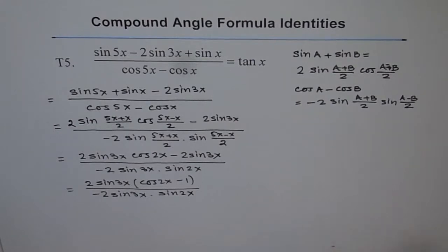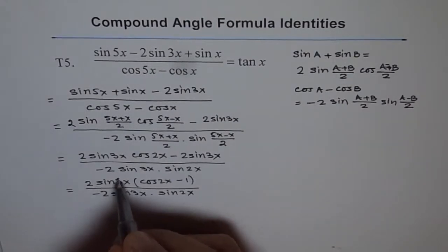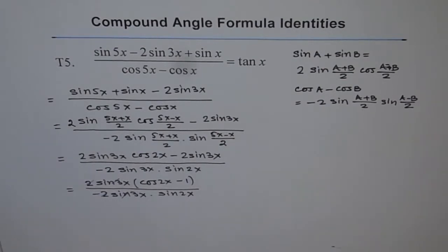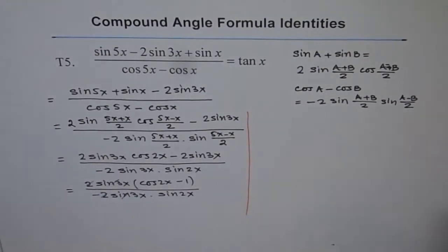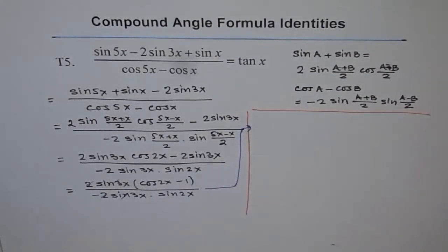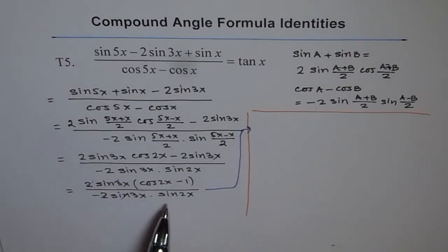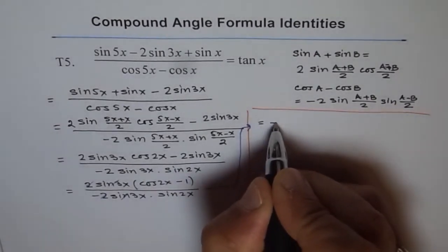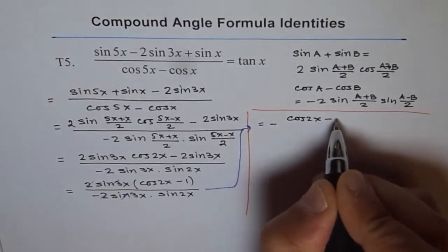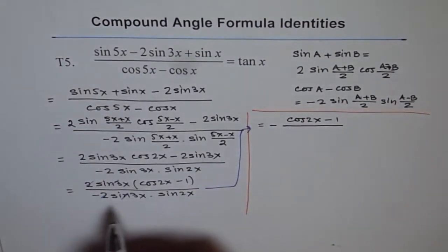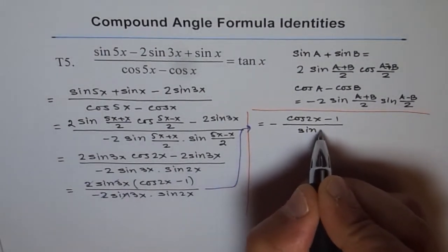Taking 2 sin 3x common from the numerator, we are left with cos 2x minus 1, divided by minus 2 sin 3x times sin 2x. The 2 sin 3x cancels out, leaving cos 2x minus 1 in the numerator and minus sin 2x in the denominator.